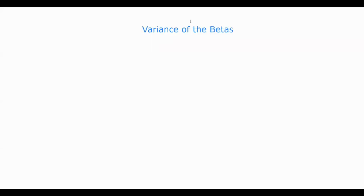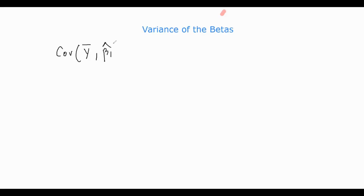Hello guys, we are back. I am back with the corresponding proof of the variance of the beta estimators. So what have we proved till now? We have proved a very important identity from the last video: the covariance of ȳ and β̂₁ is equal to zero.